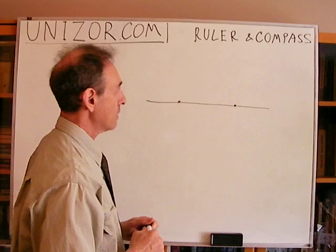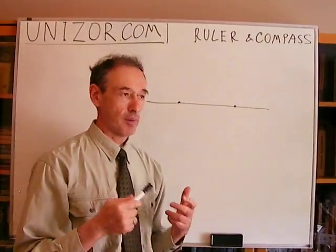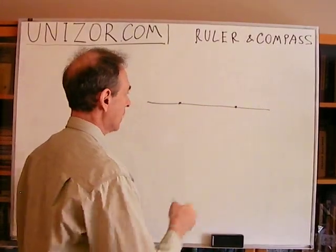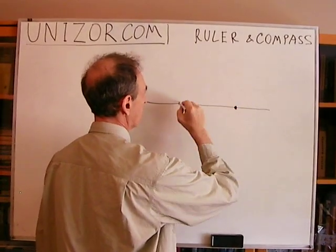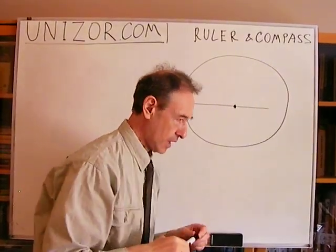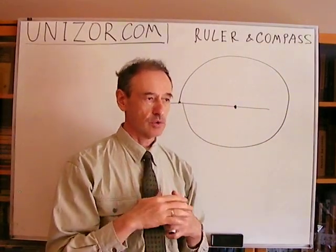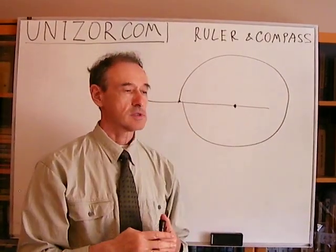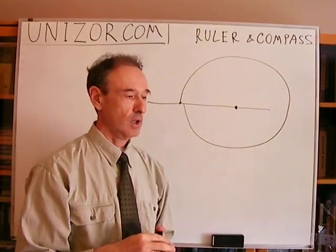Another instrument is the compass, and the compass allows us to draw a perfect, ideal, abstract circle around a particular point as a center, using a particular segment as the radius. So this is an ideal ruler and ideal compass. We can use any radius or any length between two points and we are still capable of doing something with these two tools.